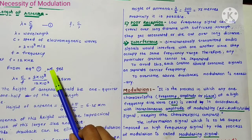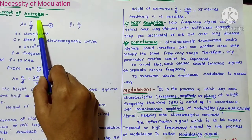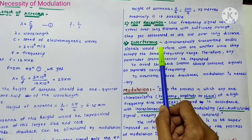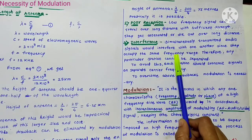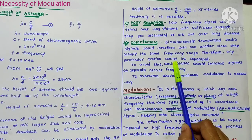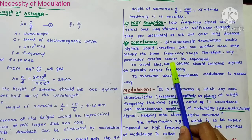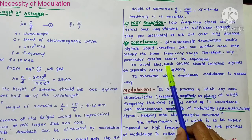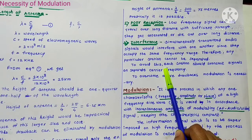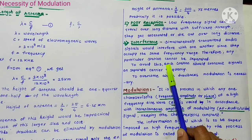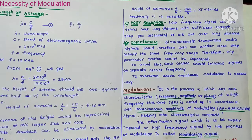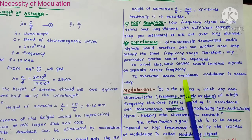To overcome these three difficulties — length of antenna, poor reception, and interference — a high-frequency carrier signal is required. For each station, this high-frequency carrier will be fixed and separate from other stations, solving the selection difficulty. Additionally, high-frequency signals do not get attenuated over long distances, so poor reception is also overcome.